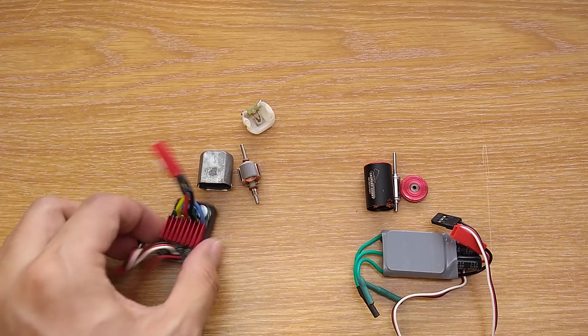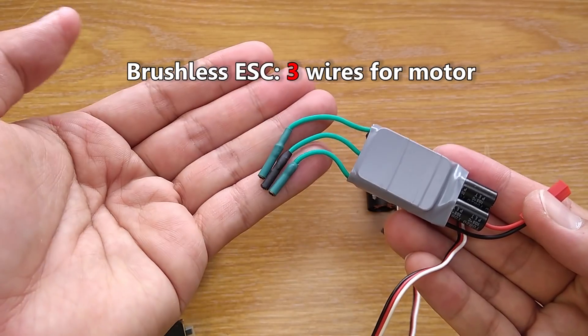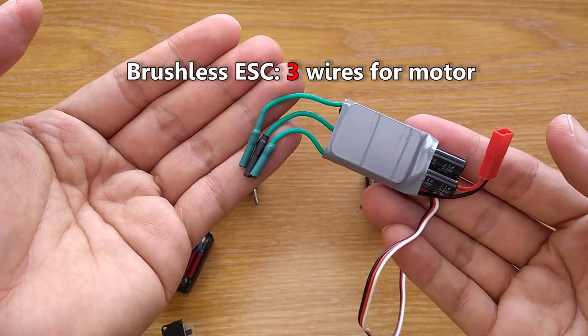And as I said earlier, a brushless motor is different than a brush motor so it needs a different kind of ESC that has 3 wires for motor.